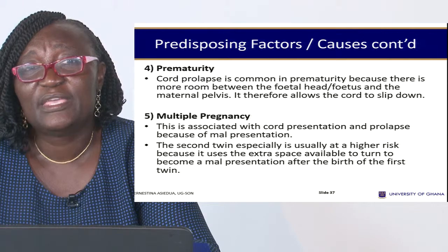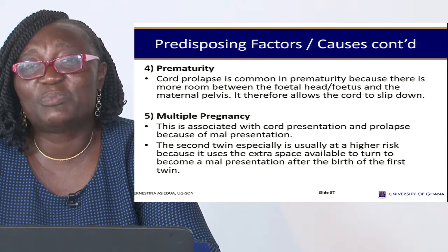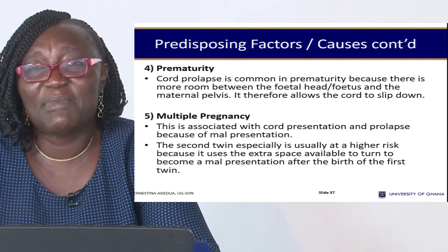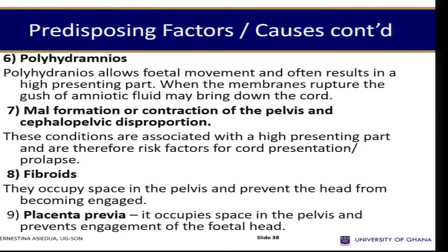The second twin is at high risk because it tends to become a malpresentation after the birth of the first twin. Polyhydramnios allows the fetus to move too freely in the uterus, and when we rupture the membranes in polyhydramnios we must rupture them slightly and guide the fluid out carefully — if you rupture widely and the fluid gushes out, it can sweep the cord alongside and bring it in front of the presenting part.